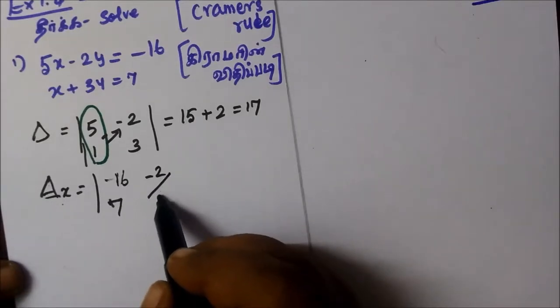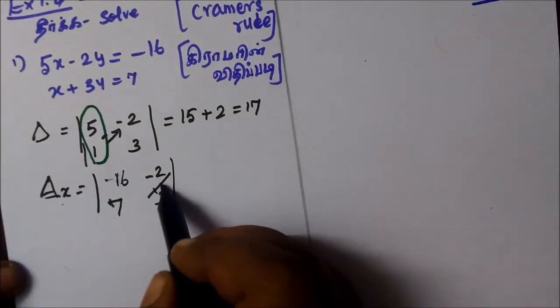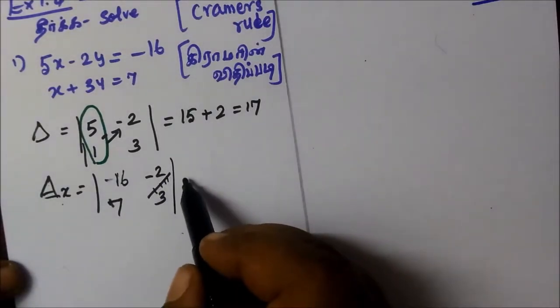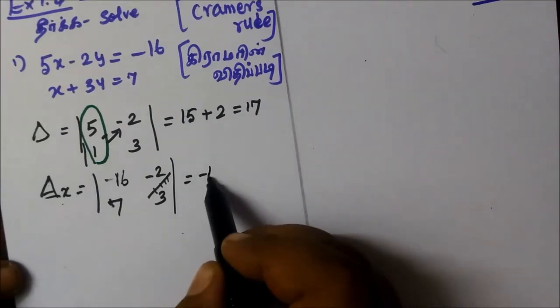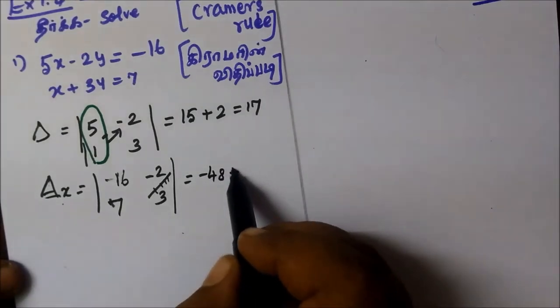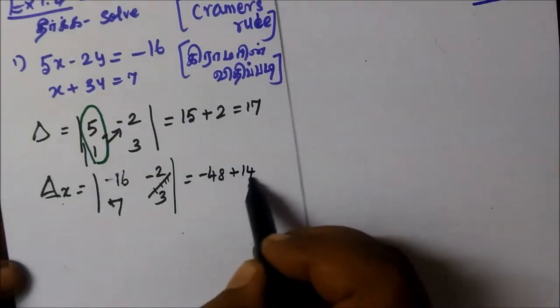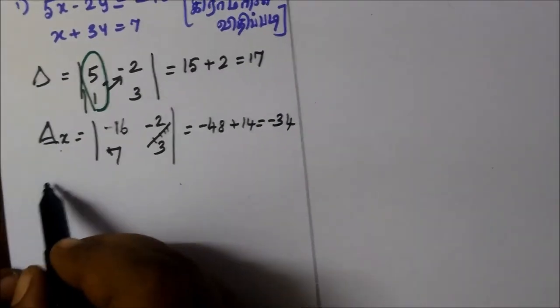So, we have the cross multiply: minus 48, then plus 14, equal to minus 34.